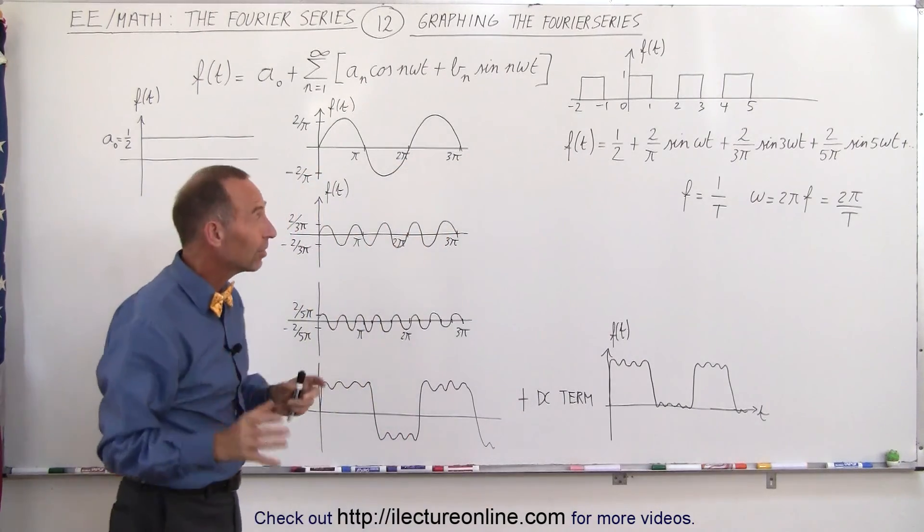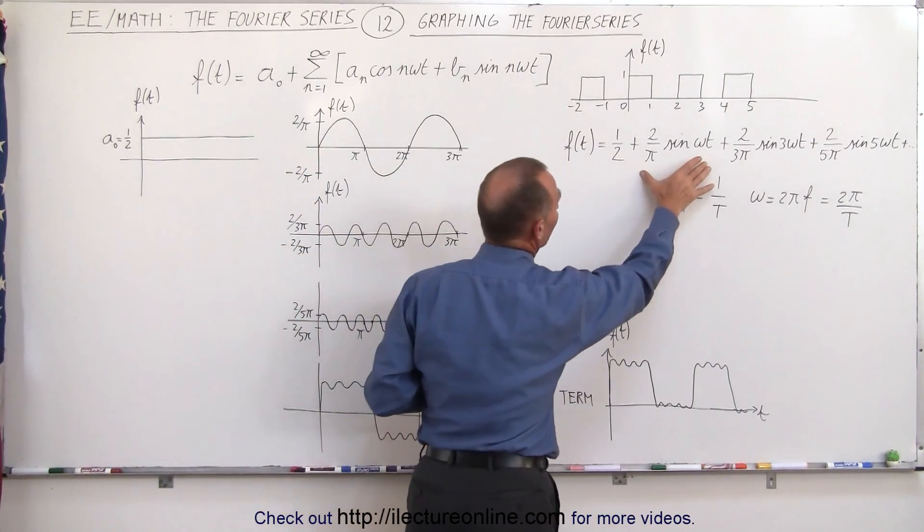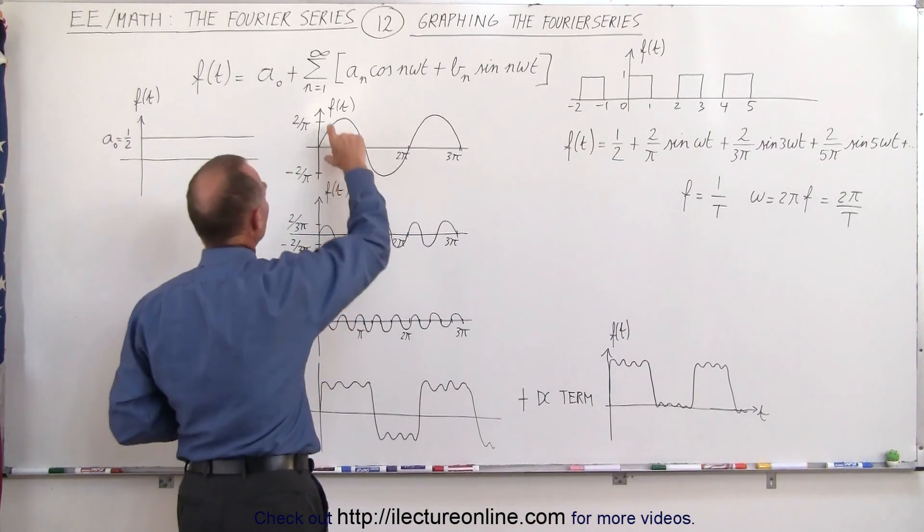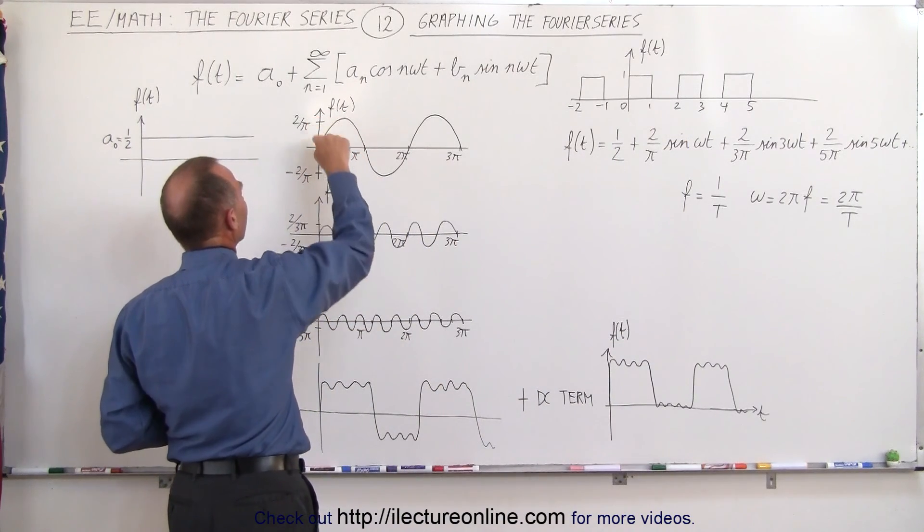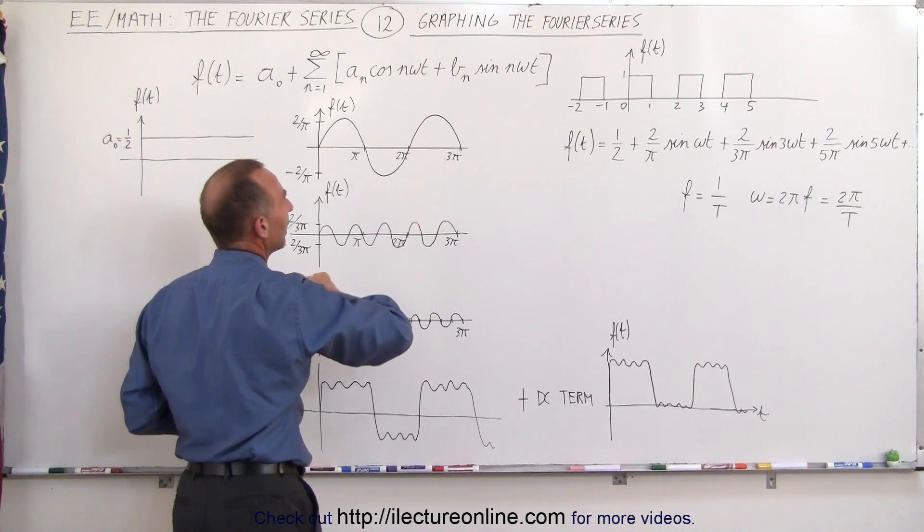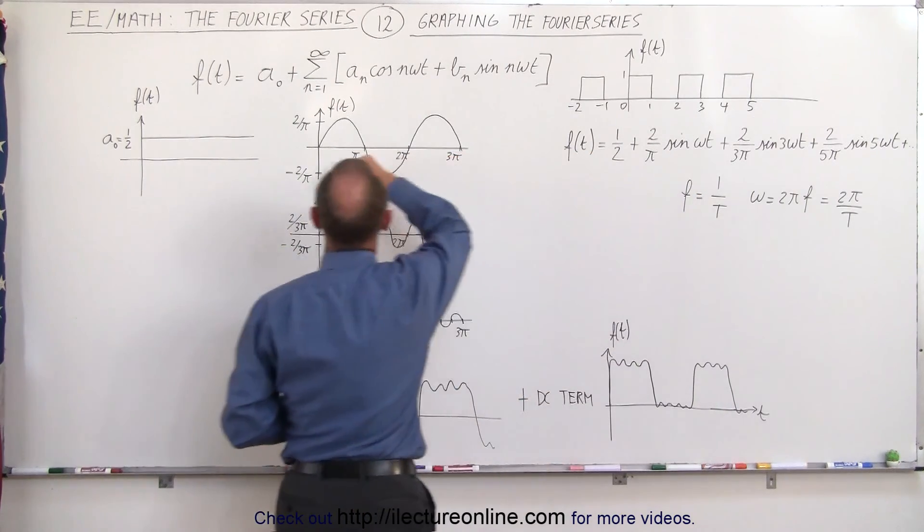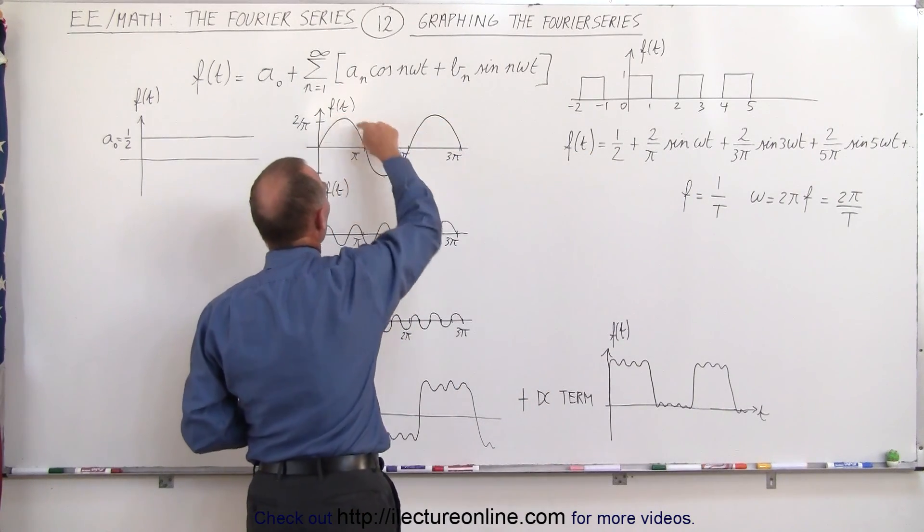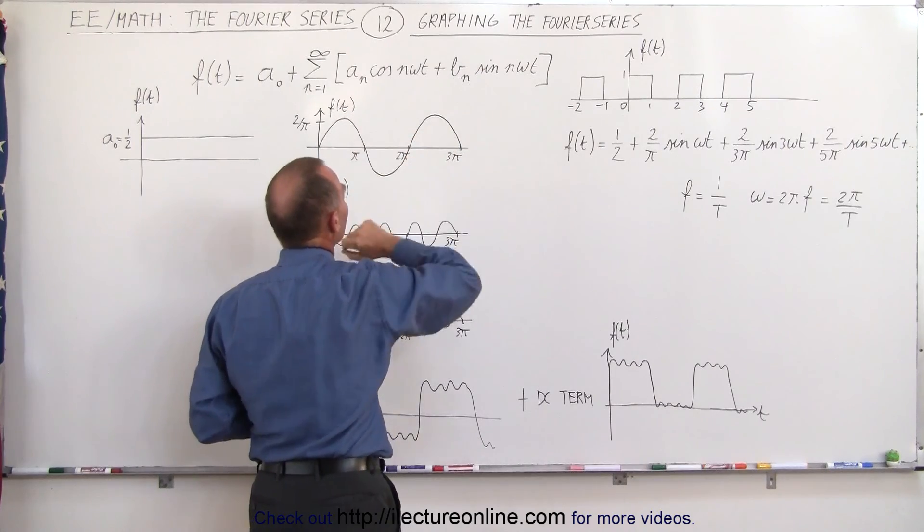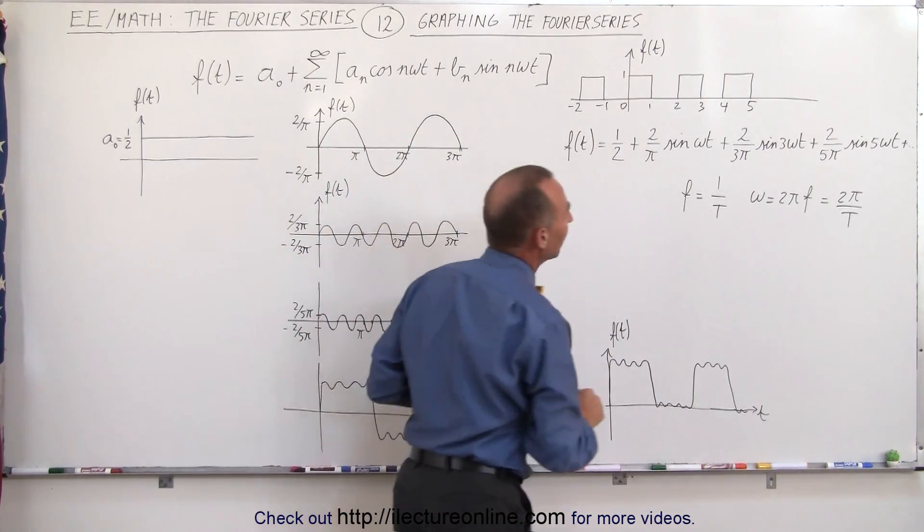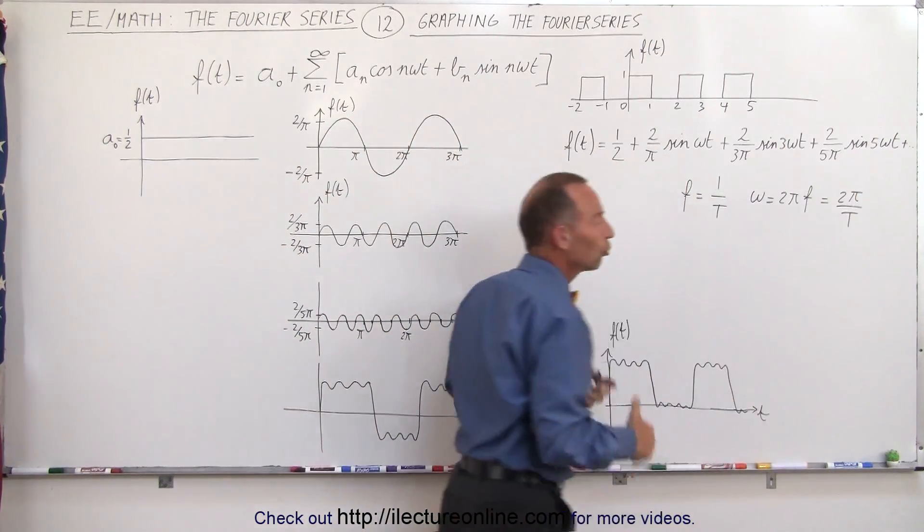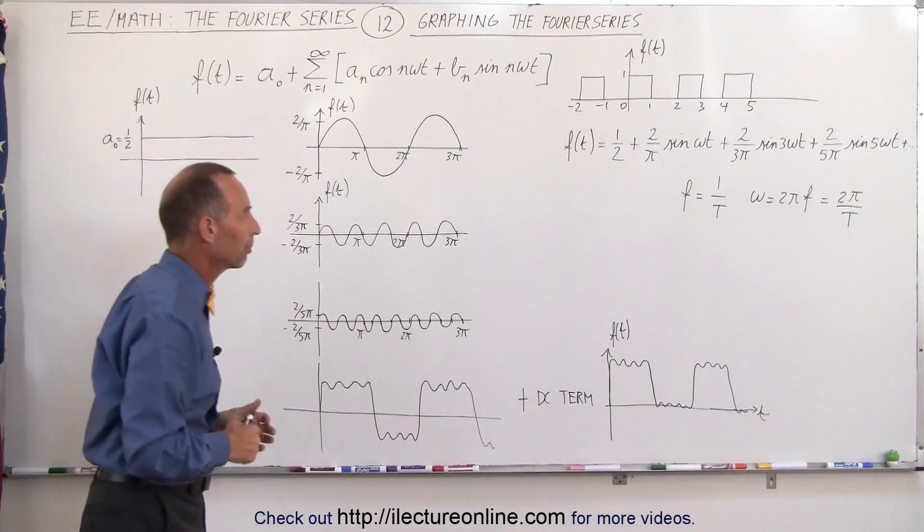Then the second portion, the second term right here, has an amplitude of 2 over π which is right here, it goes from 0 to 2 over π and 0 to negative 2 over π and it's sine of ωt which is the function right here. Notice that one wave of the function or one period of function is equal to 2π, it's 2π radians per period.